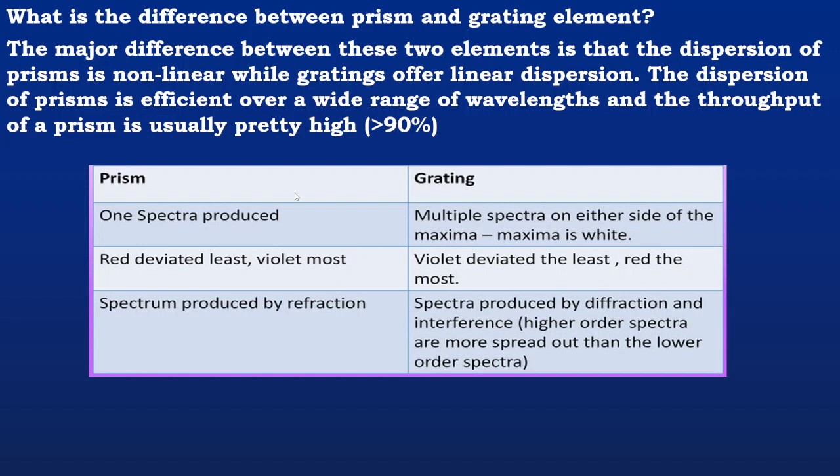The dispersion of prism is efficient over a wide range of wavelengths and throughput is pretty high. In general, a prism shows one spectra produced and red deviated least in prism while it is most deviated, and it produces the spectrum by the process of refraction.